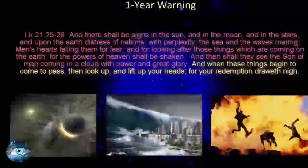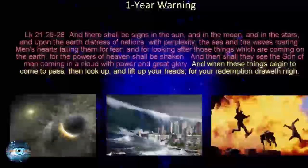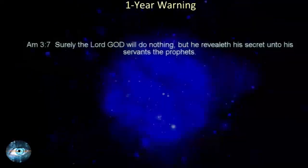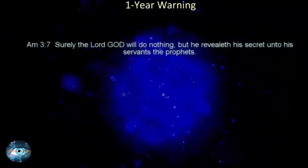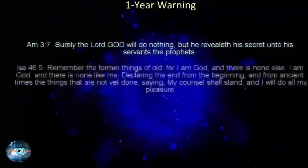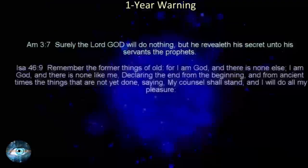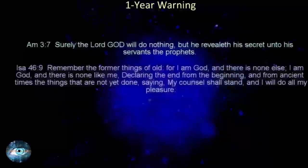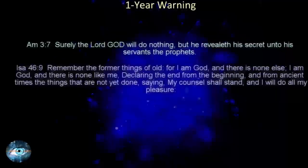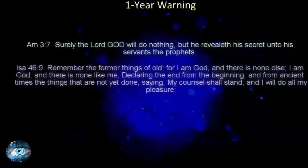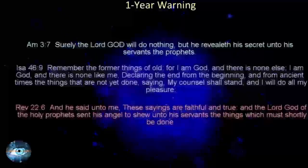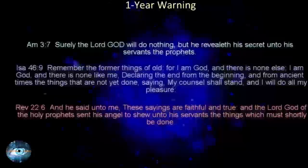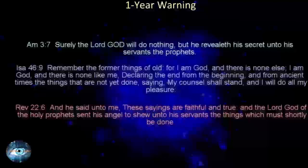This may be a very shocking and controversial discovery, but I believe God is revealing this information to us now as evidence to show us that he is real, that he is in control of the universe, and that he is more than capable of declaring the end right from the beginning. He also keeps his promises and shows those who belong to him what he plans to do before it happens. Amos 3 verse 7: Surely the Lord God will do nothing, but he revealeth his secret unto his servants the prophets. Isaiah 46 verse 9: Remember the former things of old, for I am God, and there is none else; I am God, and there is none like me, declaring the end from the beginning, and from ancient times the things that are not yet done, saying, My counsel shall stand, and I will do all my pleasure. Revelation 22 verse 6: And he said unto me, These sayings are faithful and true, and the Lord God of the holy prophets sent his angel to show unto his servants the things which must shortly be done.